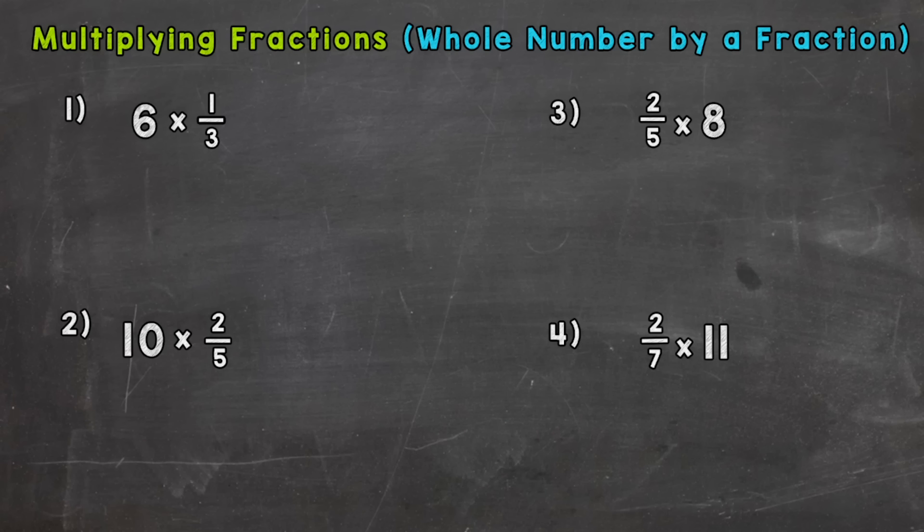So let's jump right in to number one and we have 6 times 1/3. So whenever we're multiplying a whole number by a fraction the first thing we want to do is take the whole number and make it into a fraction. All you have to do for that is put the whole number over one. Now we have a numerator and a denominator and then bring down the rest of your problem.